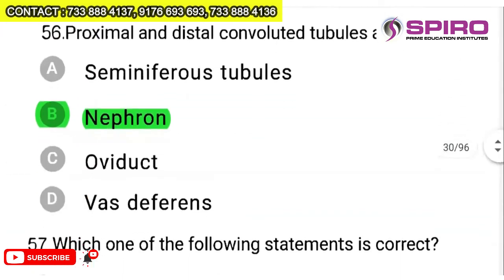Question 56: PCT and DCT are parts of what structure? This is a baby question — the answer is nephron.